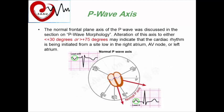Regarding the P wave axis in the frontal plane, it is normally from positive 30 to positive 75 degrees. Alteration in this axis may indicate that cardiac rhythm is being initiated from a site low in the right atrium, the AV node, or the left atrium — but not from the SA node.